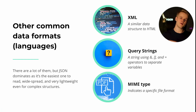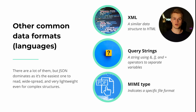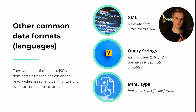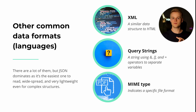Now let's talk about other common types used for data formats, which I also consider content types since that's usually what you define within a request. Those are XML, query strings, and MIME types, which are essentially images or files you can stream through a response. Let's go over them step by step.